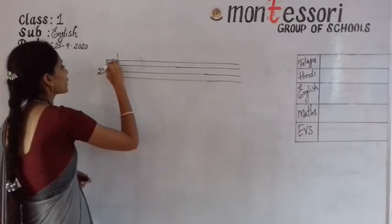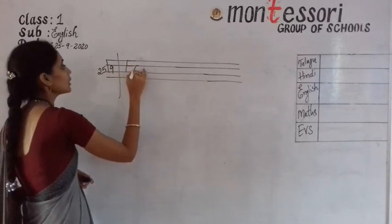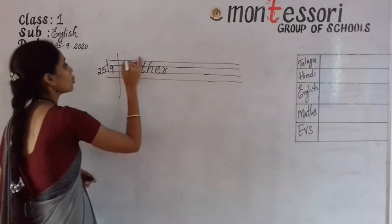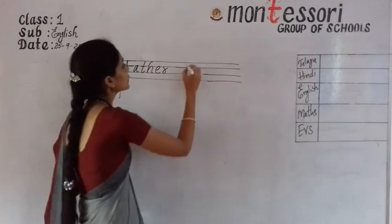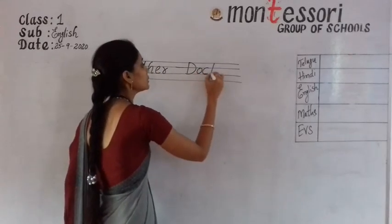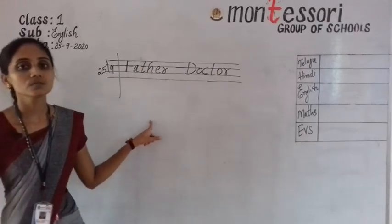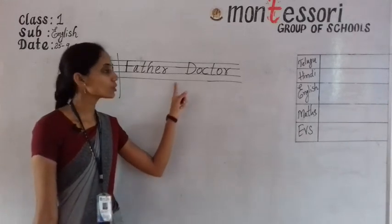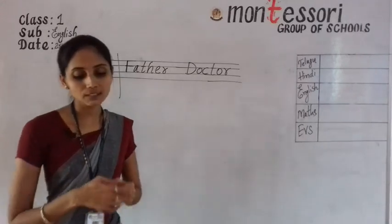Date: 25, 9. First one: father, F-A-T-H-E-R, father. Next: doctor, D-O-C-T-O-R, doctor. These are your homework words. You have to note these words in your homework book.